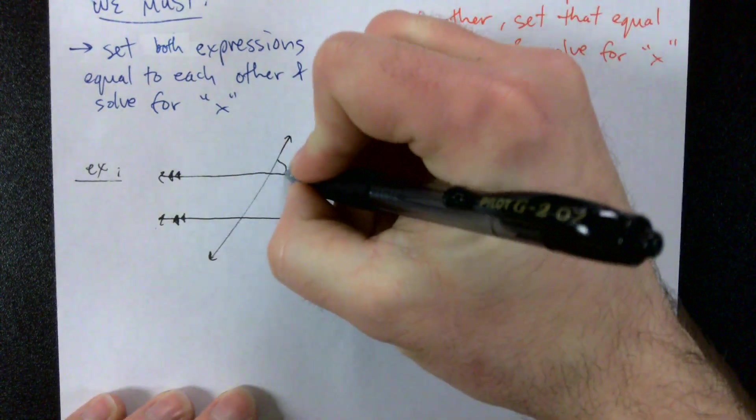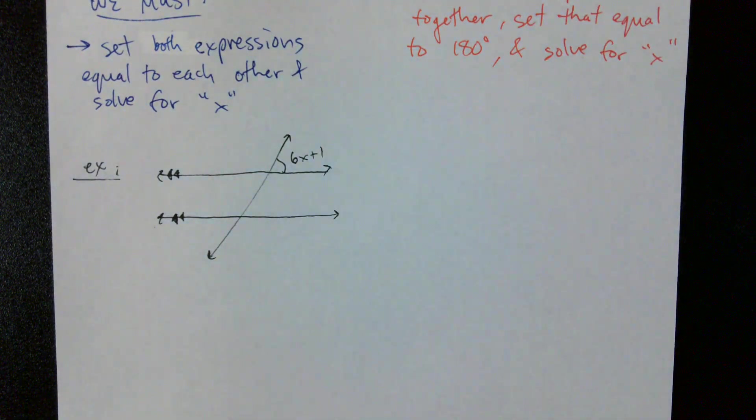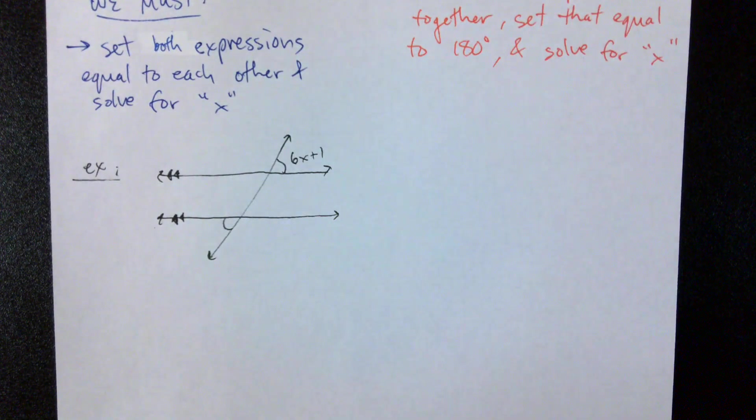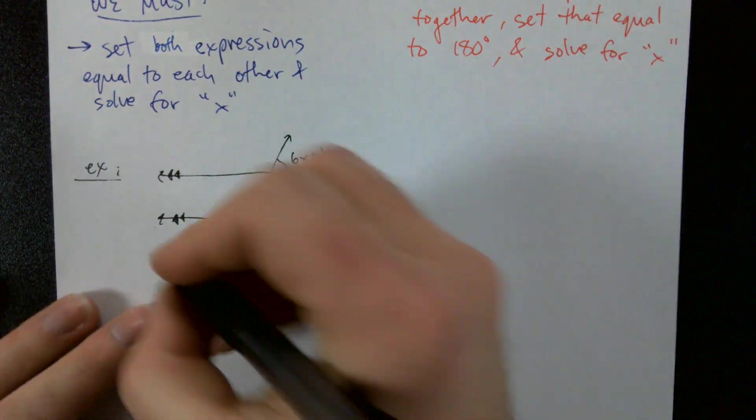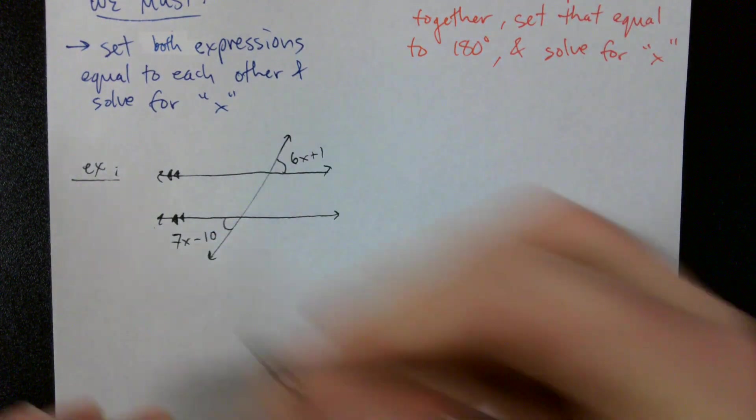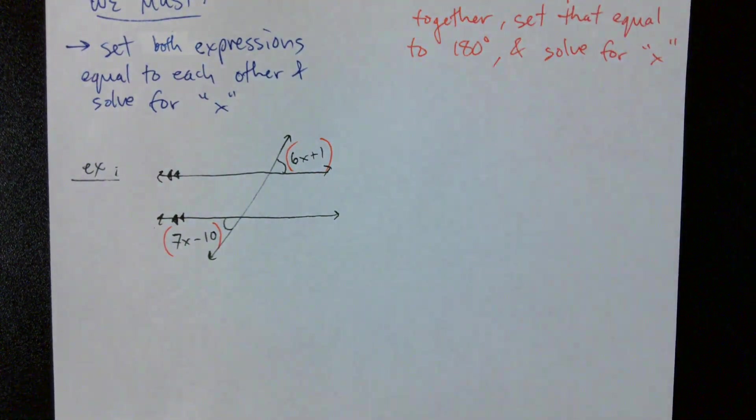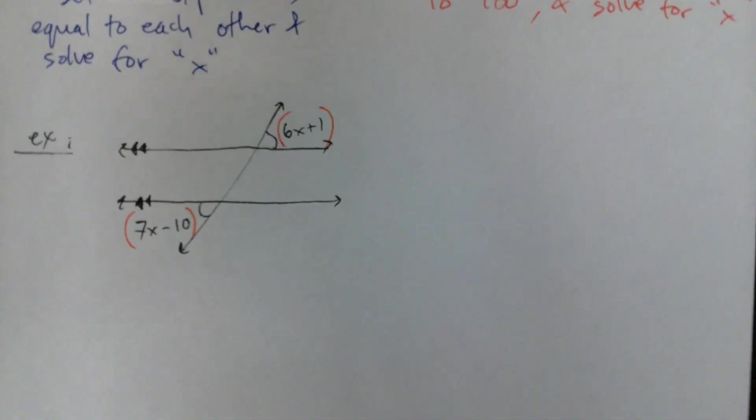So let's go ahead and say this top angle here is 6x plus 1, and this angle down here is going to be 7x minus 10. So there's our two expressions for that first example.